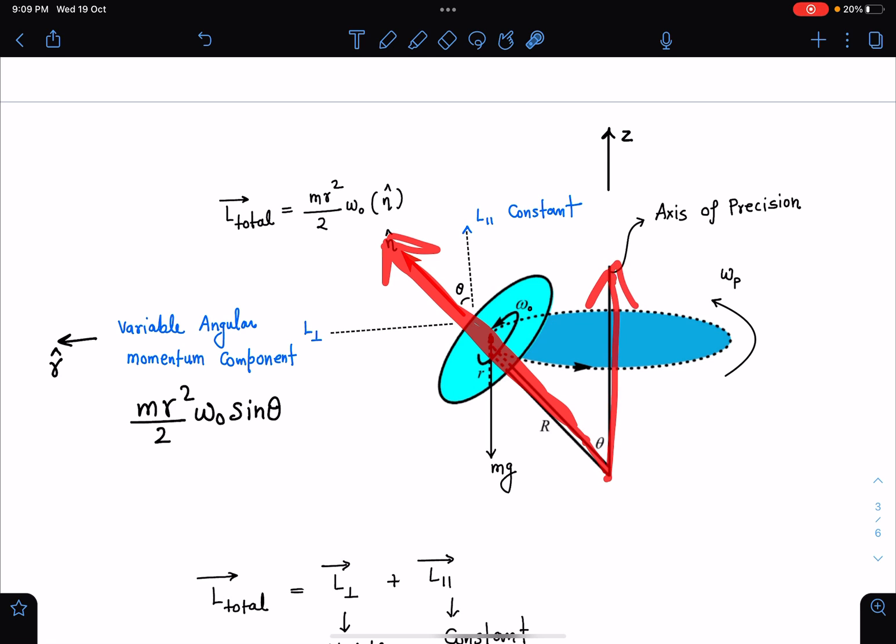There are two types of omegas: one is pointing in this direction and one is pointing in this direction. Since about this axis which passes through its center it is in pure rotation with omega naught, the total angular momentum of this disc is m*r^2/2 * omega_naught, and I am calling this unit vector in this direction as n cap.